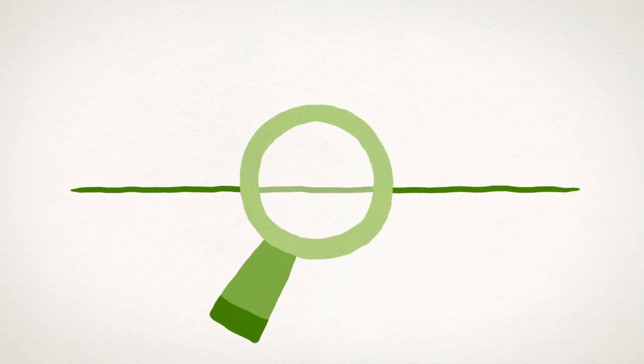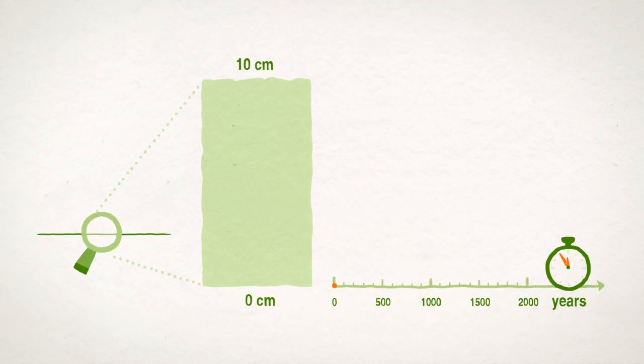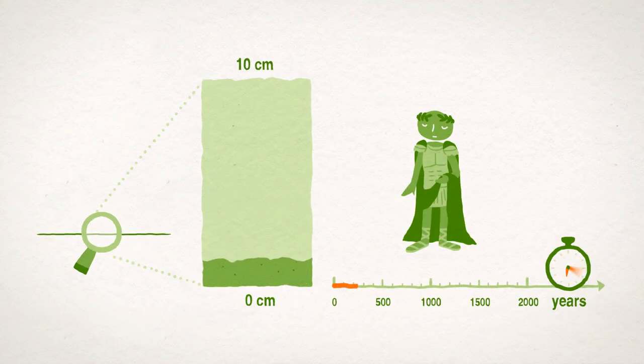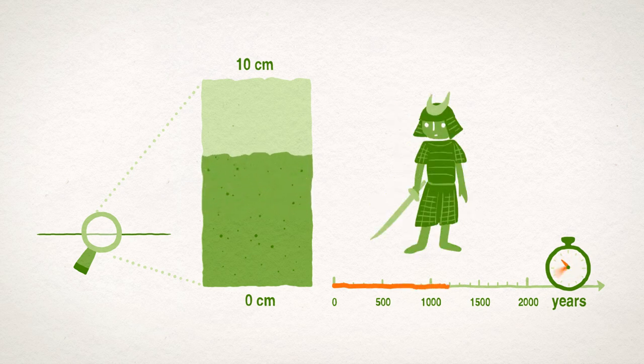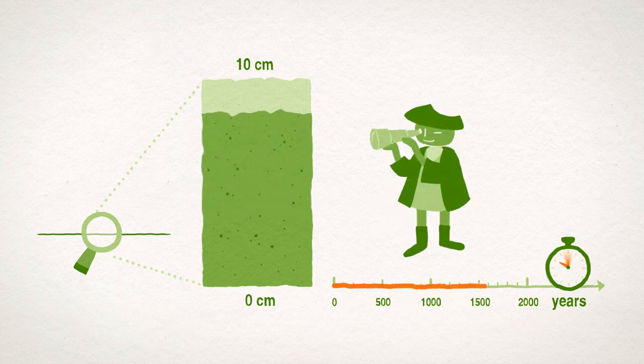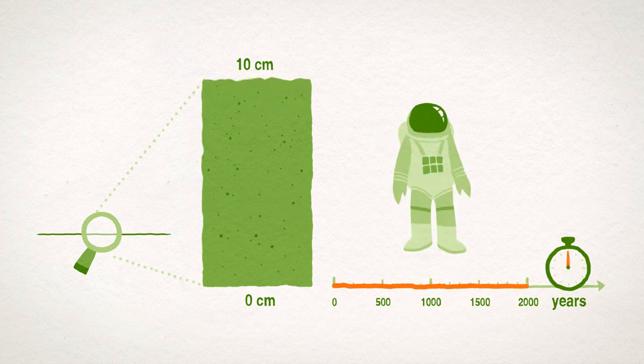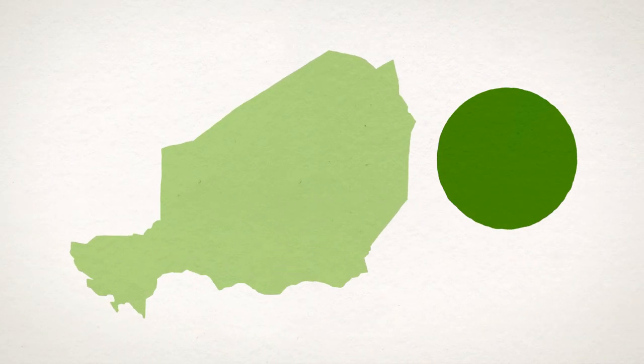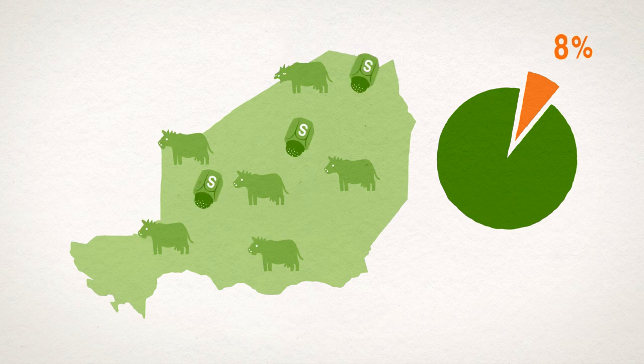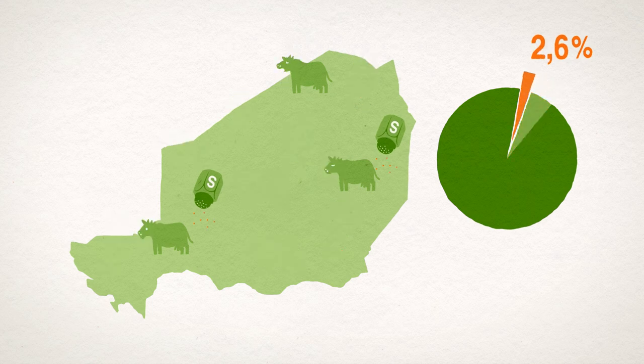But why does all of this matter so much? Well, because it takes 2,000 years to generate about 10 cm of topsoil. That is a long time. Soil is a practically non-renewable resource whose over-exploitation is costing us dearly. For example, Niger loses approximately 8% of its gross domestic product to overgrazing and excessive salinity in rice paddy fields. Solving these problems through sustainable land management would save two-thirds of this money.